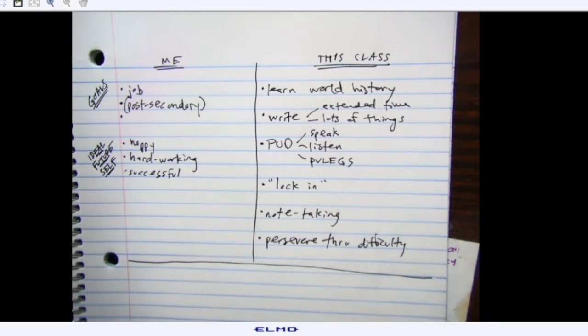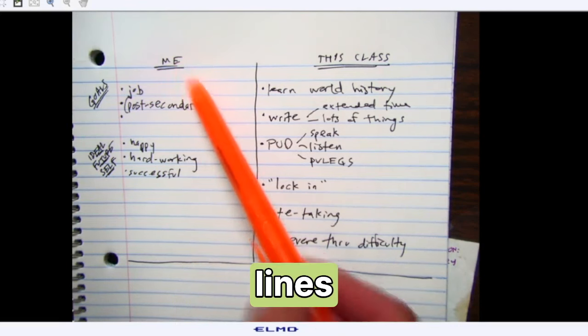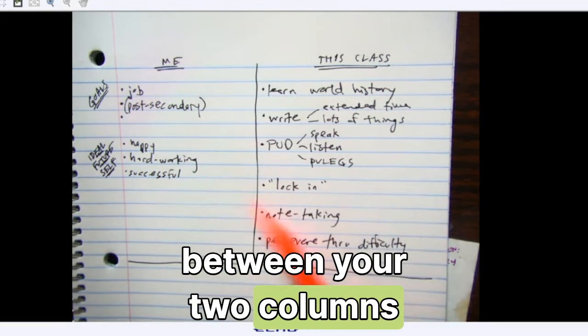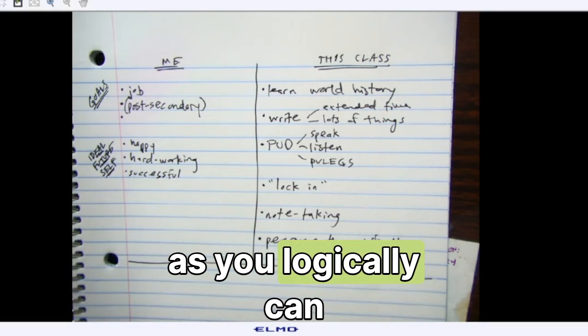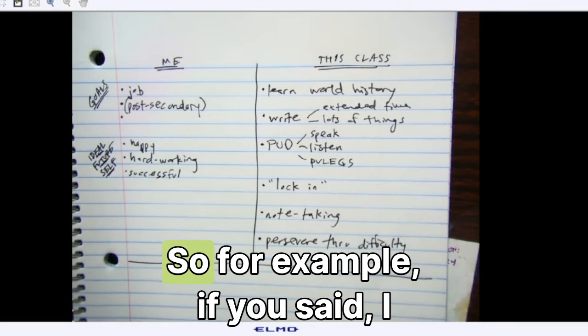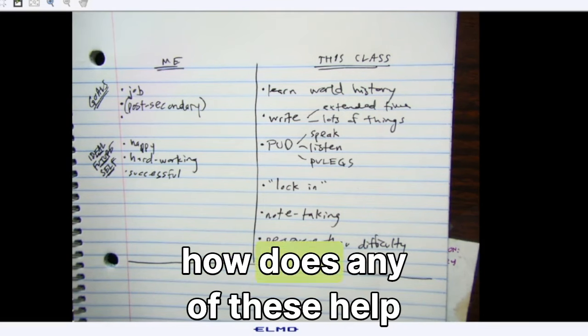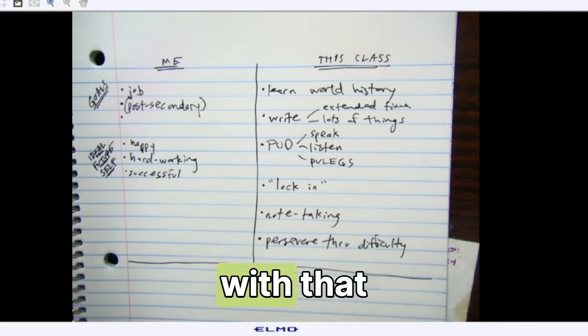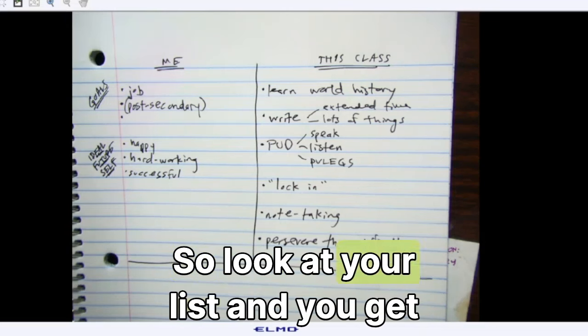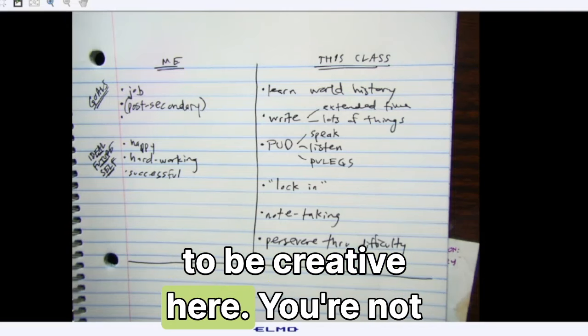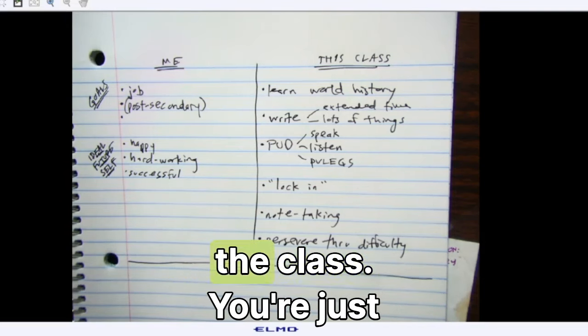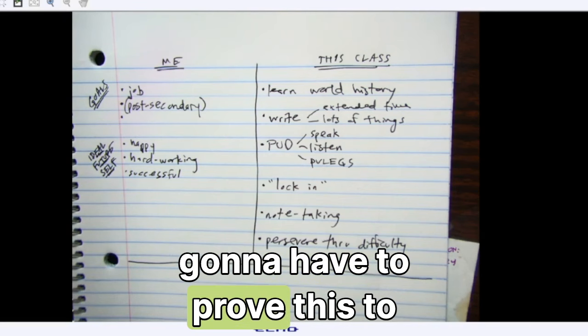We're going to do one more activity on this, and then we're going to write. So here's the activity. Your job is to draw as many lines between your two columns as you logically can. For example, if you said, I want to be happy in life, how does any of these help with that? So look at your list, and you get to be creative here. You're not going to have to prove this to the class. You're just going to have to prove this to yourself.